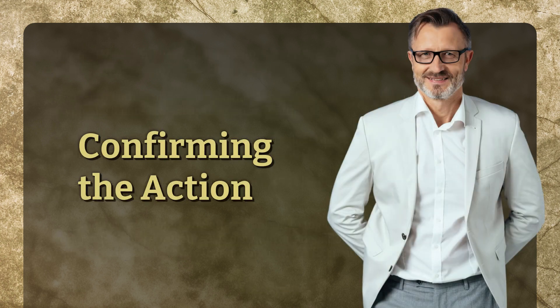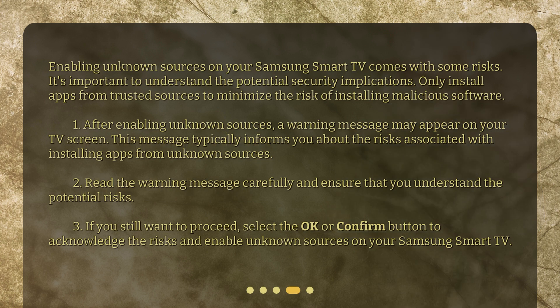Confirming the action. Enabling unknown sources on your Samsung Smart TV comes with some risks. It's important to understand the potential security implications. Only install apps from trusted sources to minimize the risk of installing malicious software. After enabling unknown sources, a warning message may appear on your TV screen. This message typically informs you about the risks associated with installing apps from unknown sources. Read the warning message carefully and ensure that you understand the potential risks. If you still want to proceed, select the OK or Confirm button to acknowledge the risks and enable unknown sources on your Samsung Smart TV.